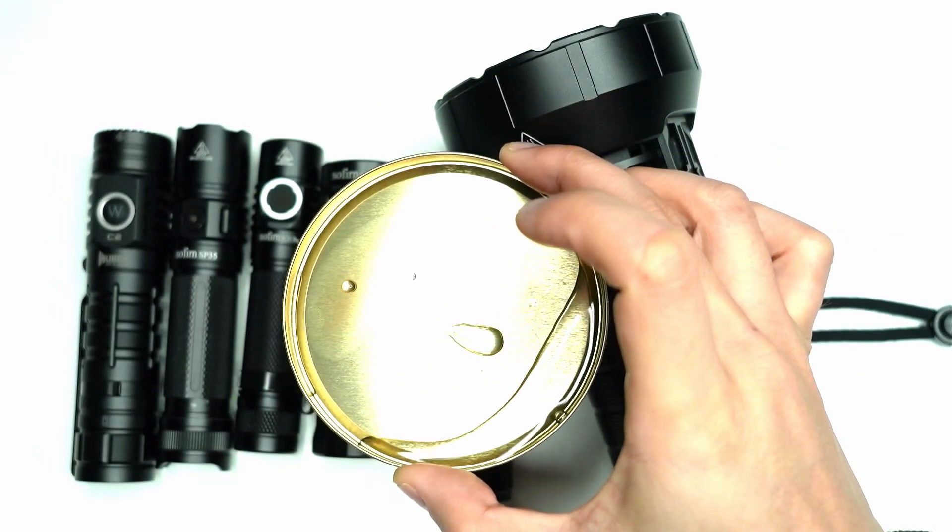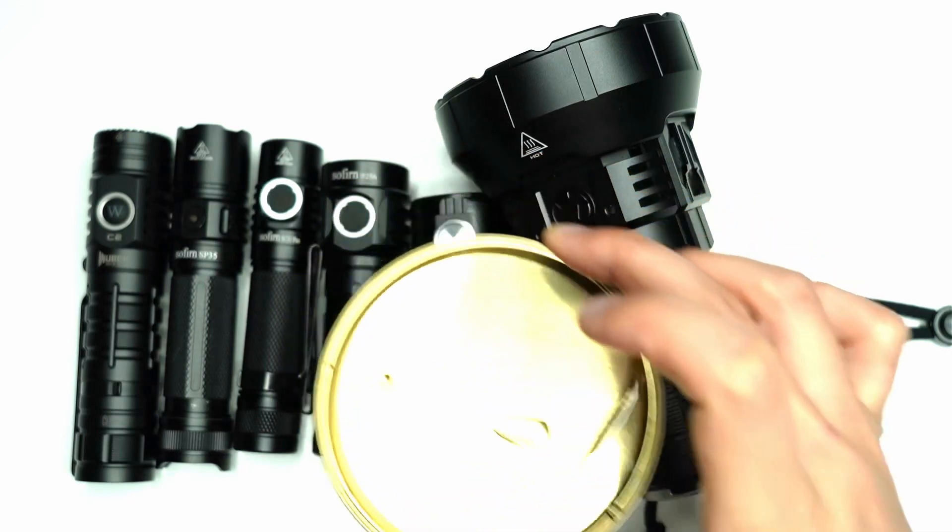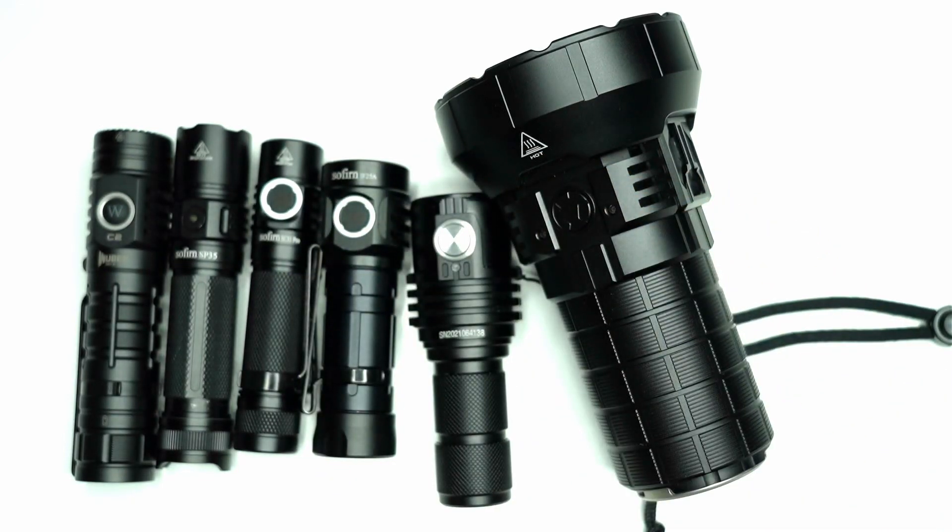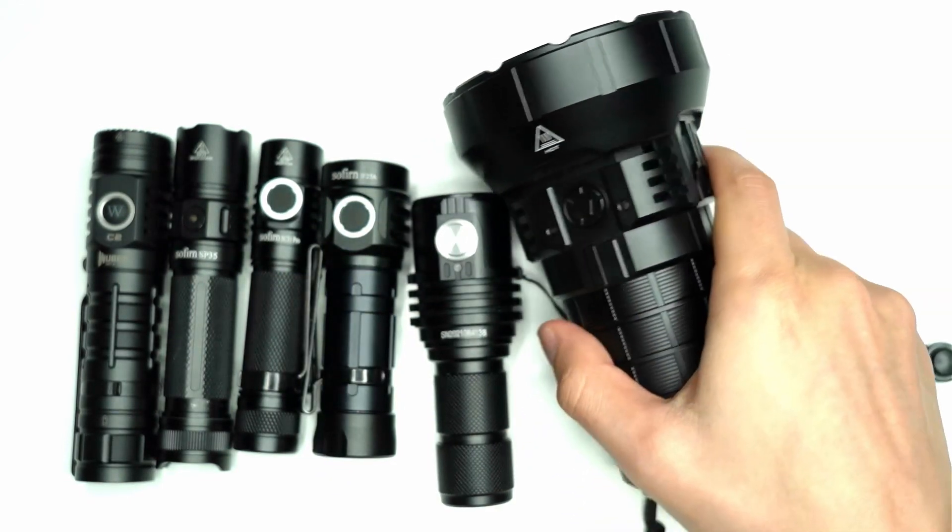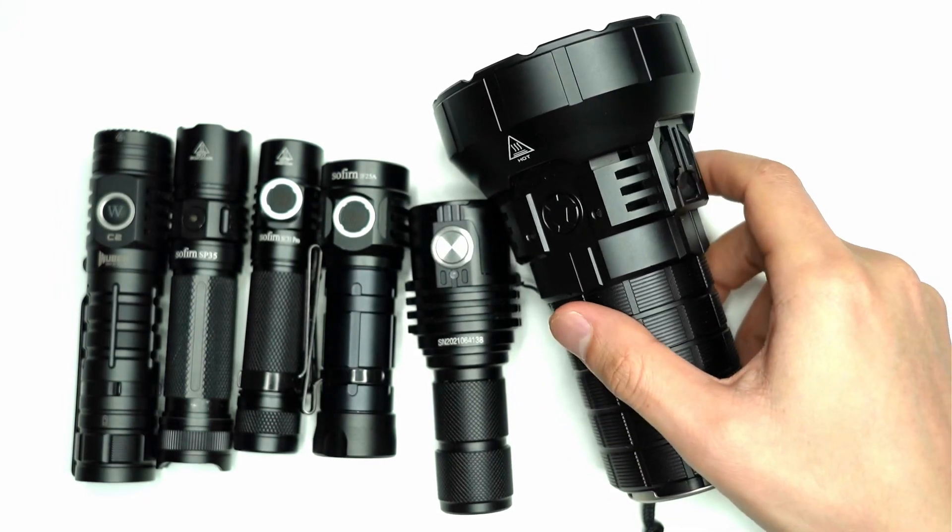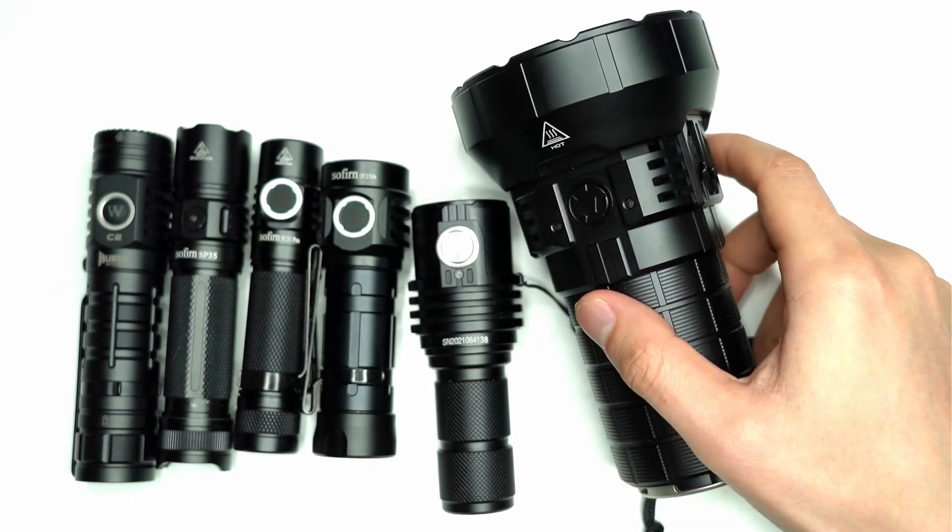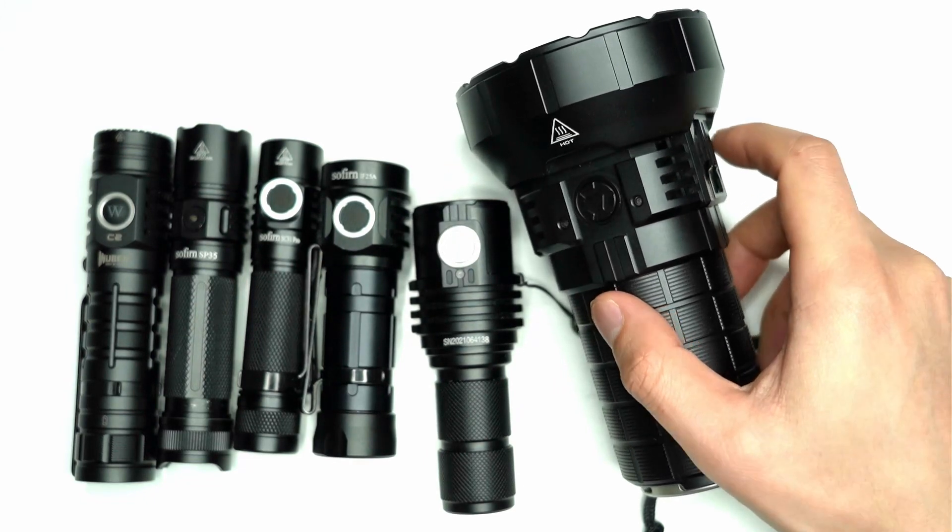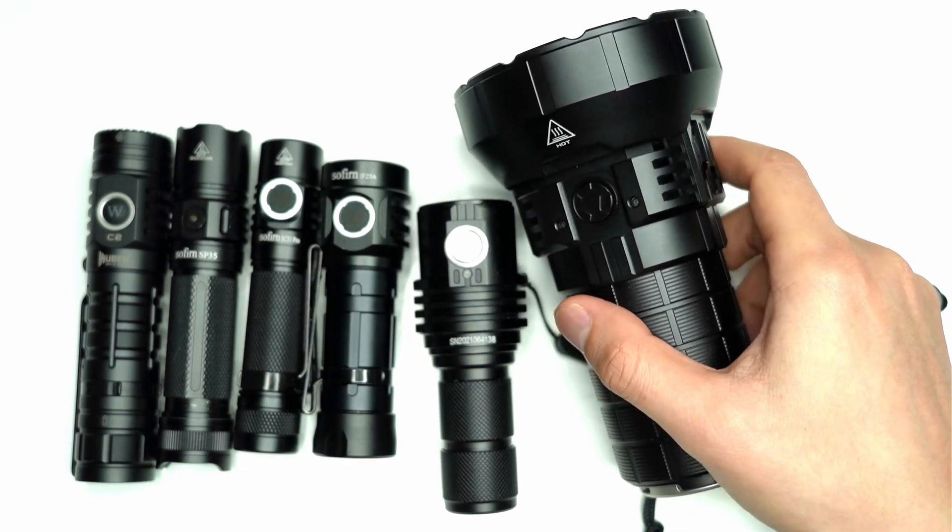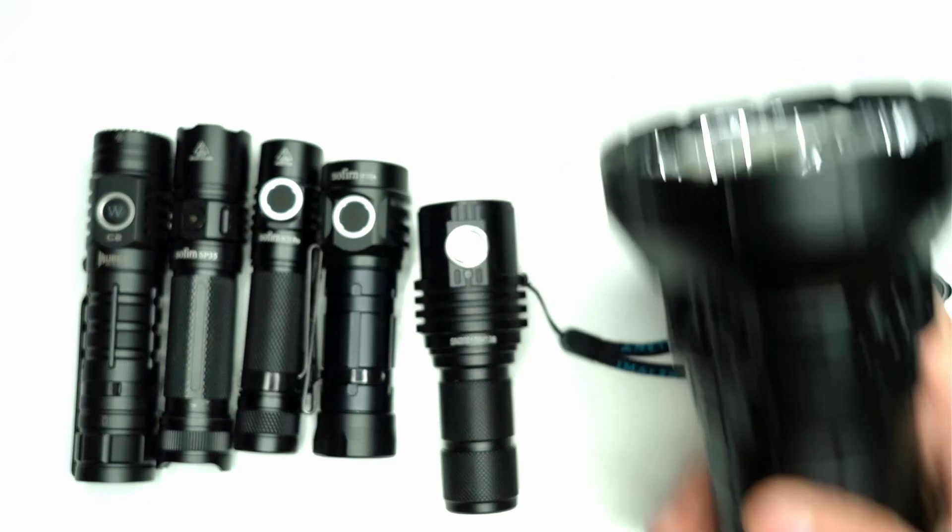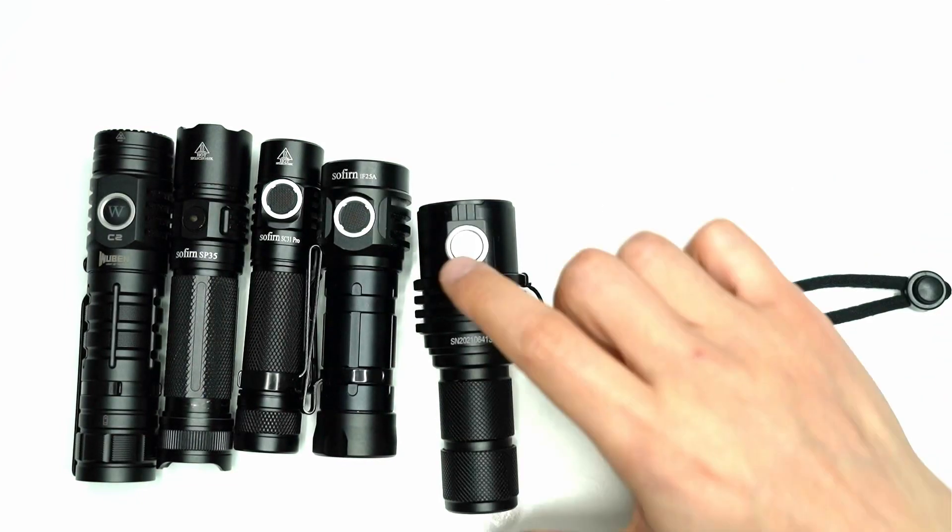Let's start off with the smaller flashlights first. This one here is the Imalent MR90, 50,000 lumens—I think it's actually 52 or 54,000 lumens when they tested it. I'm pretty sure this one's going to do something. And over here we've got the second brightest flashlight that I have, the Imalent MS03.